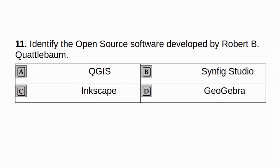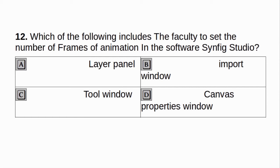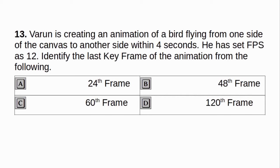Identify the open-source software developed by Robert B. Kotelbaum. A. QGIS. B. Synfig Studio. C. Inkscape. D. GeoGebra. Answer: B. Synfig Studio. Which of the following includes the facility to set the number of frames of animation in software Synfig Studio? A. Layer Panel. B. Import Window. C. Tool Window. D. Canvas Properties Window. Answer: D. Canvas Properties Window.